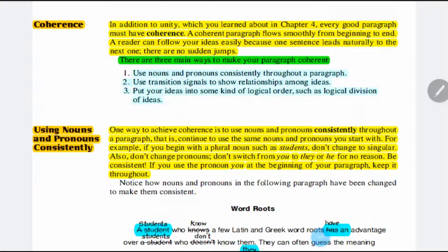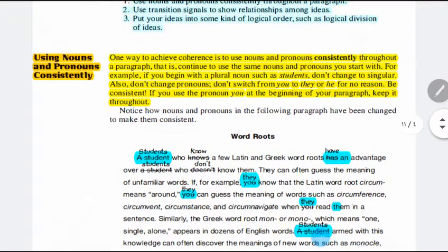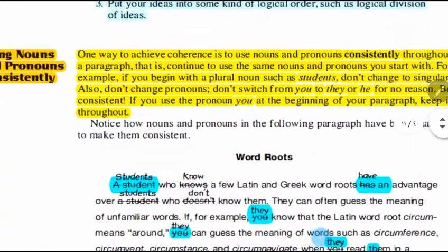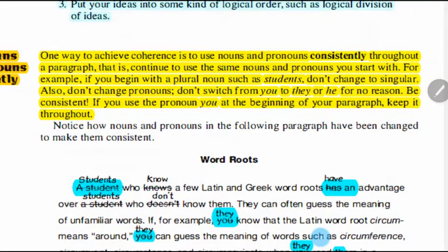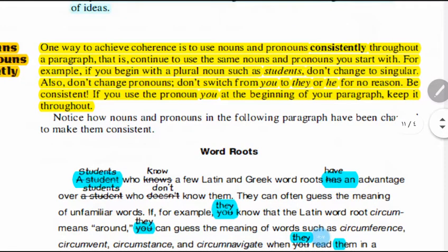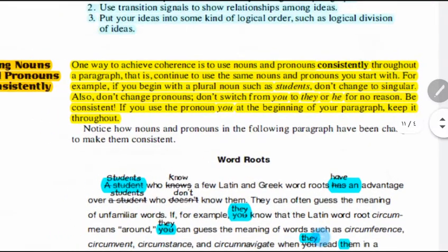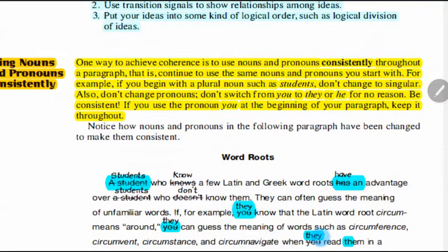One way to achieve coherence is to use nouns and pronouns consistently throughout a paragraph — continue to use the same noun and pronoun you start with. For example, if you begin with a plural noun such as 'students,' don't change to singular. Also, don't switch from 'you' to 'they' or 'he' for no reason. Be consistent — if you use the pronoun 'you' at the beginning of your paragraph, keep it. If your paragraph talks about students, use the pronoun 'they' and 'them,' but don't jump to 'you' or 'he' or 'she' without reason.